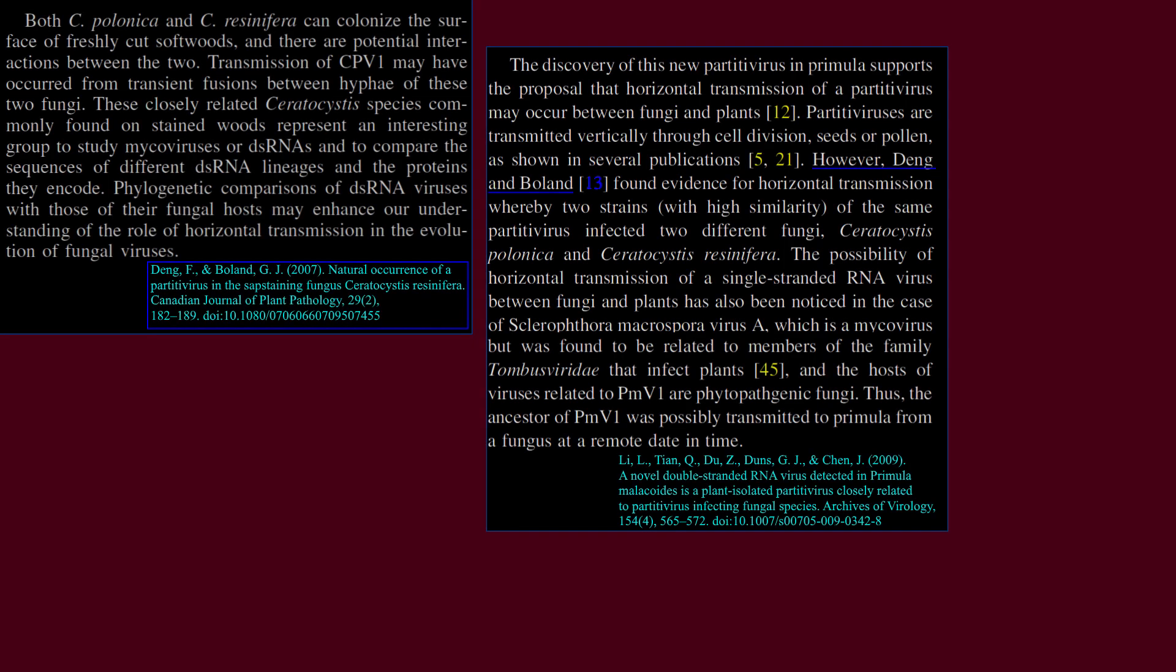Examples exist of partitiviruses such as Ceratocystis partitivirus 1 that infect two different but closely related species of plant pathogenic fungi horizontally. And since partitiviruses can be associated with both fungi and plants as hosts, the possibility of horizontal transfer from fungal plant pathogen to plant hosts is considered. But more research is needed to make any conclusions.